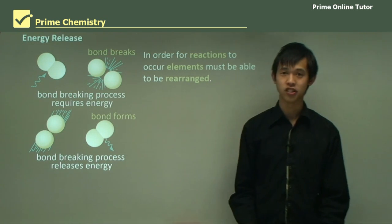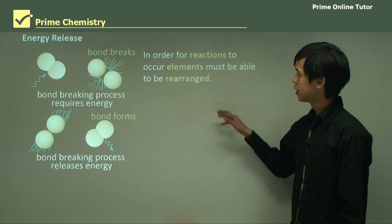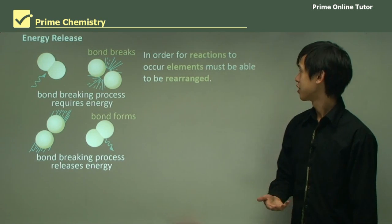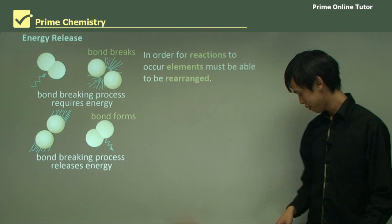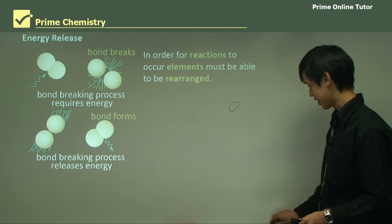So how do we release energy from these reactions? What actually is happening on a microscopic level? So in order for reactions to occur, elements must be rearranged. So I like these circle diagrams.